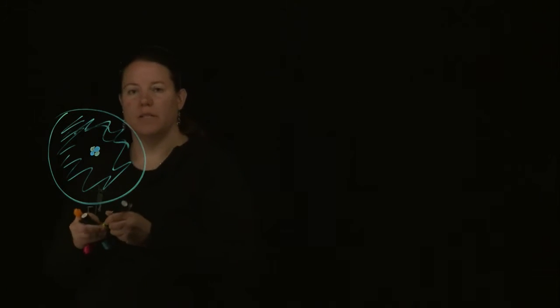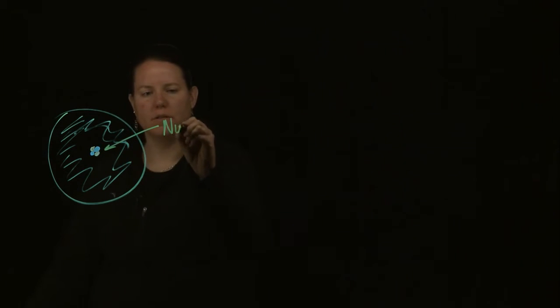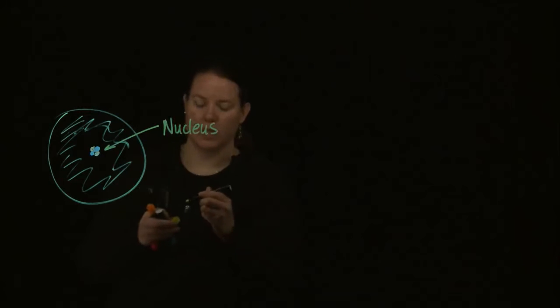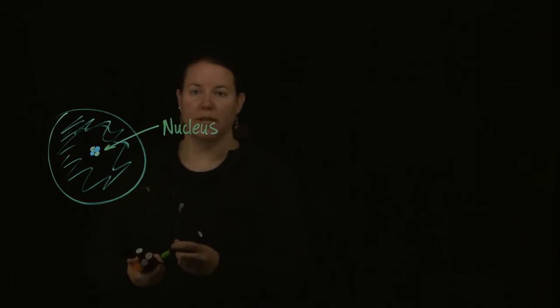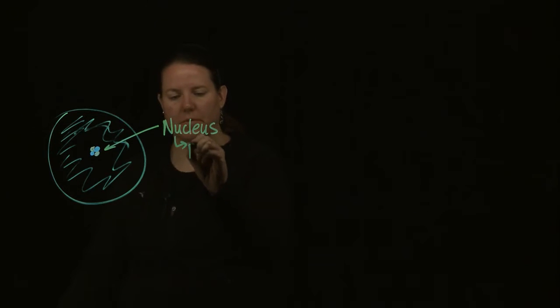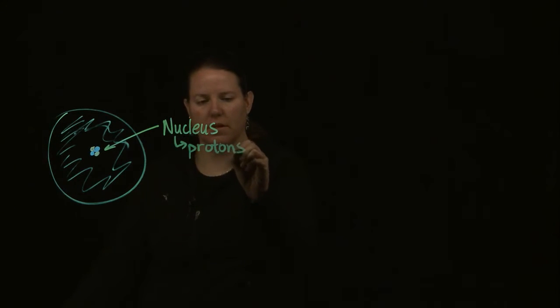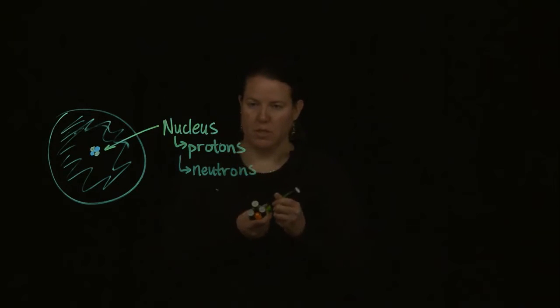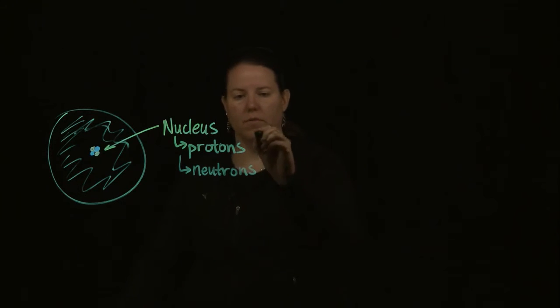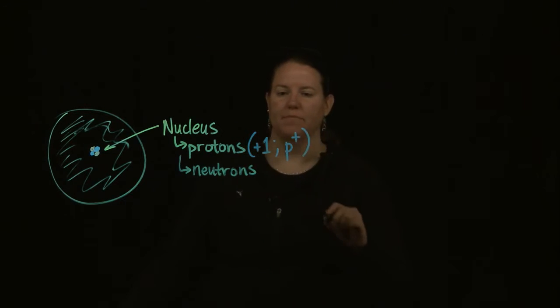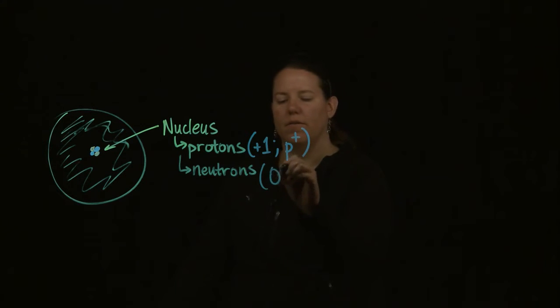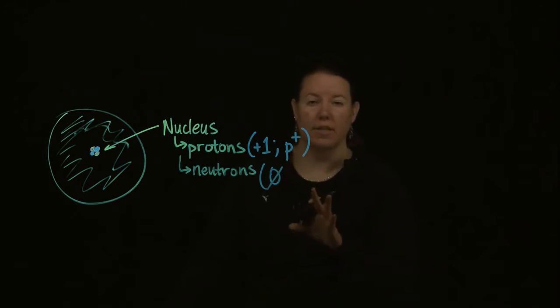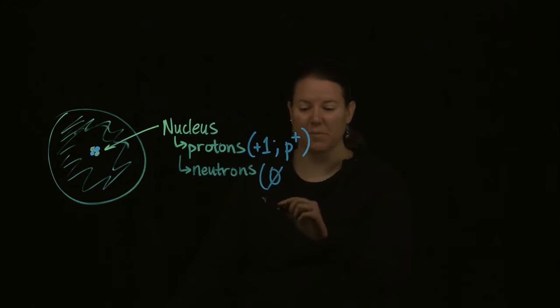That has the centerpiece called the nucleus, and the nucleus has both protons and neutrons in it. So it has two subatomic particles: protons and neutrons. Protons have a plus one charge and are therefore designated as p+. And neutrons have no charge at all.